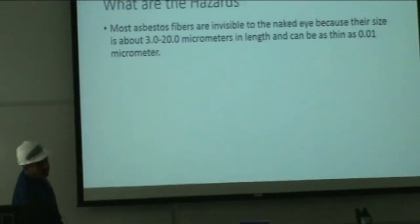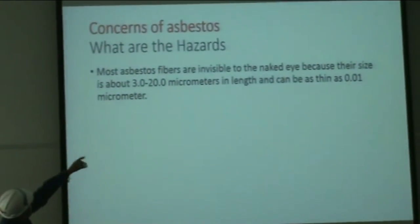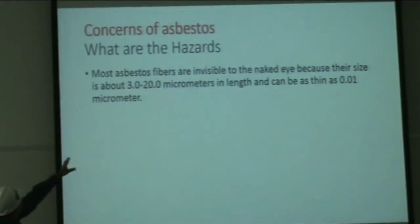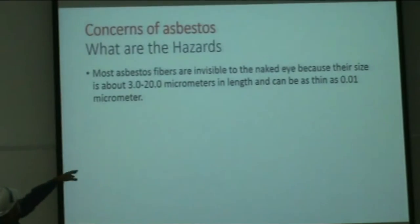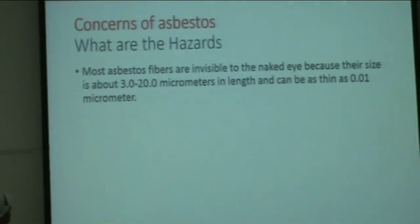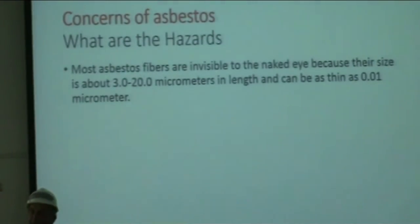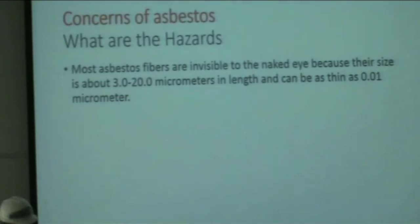What are the hazards? Most asbestos fibers are invisible to the naked eye because their size is about 3 to 20 micrometers in length and can be as thin as one-hundredth of a micrometer. One micrometer is one millionth of a meter, so these are quite small.